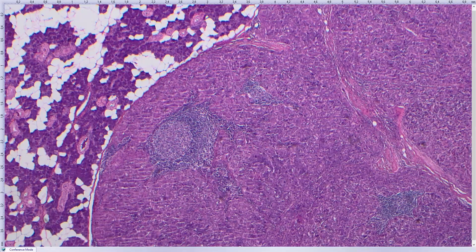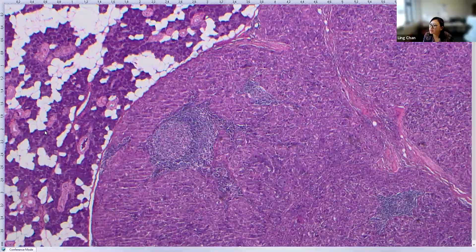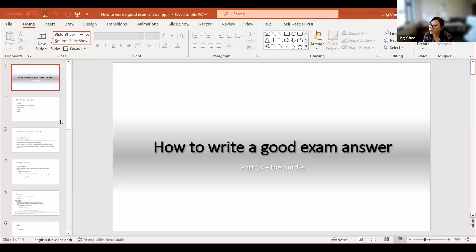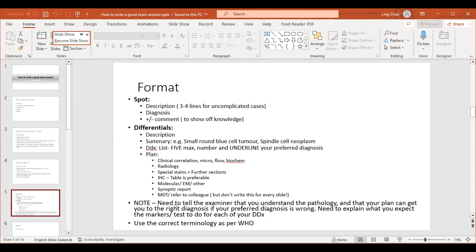Yes — perfect. So it's acinic cell carcinoma. So this is how I would write this case: that was really good, Roshni. I use three to four lines of description and then write the diagnosis. This is a spot, and then you add a comment about the differential of secretory cell carcinoma. So that was good — done.